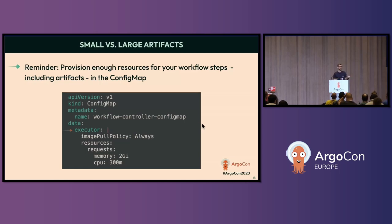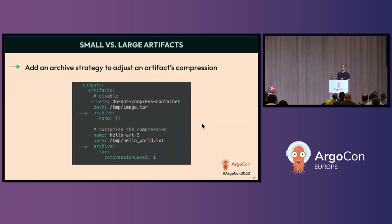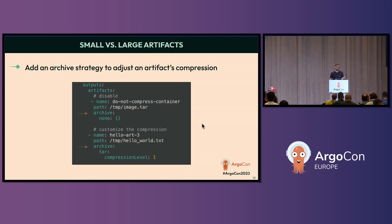A lot of folks end up having to come back to the config map and fix that problem. When it comes to artifact scale and size, you might also consider adjusting your archiving strategy in the workflow definition. You can turn off compression so things aren't zipped at the end of a step — handy for some CI use cases — or you can compress further than the default using a GZIP value. At scale, this can help you save costs if you're aggregating a lot of artifacts in your repository.